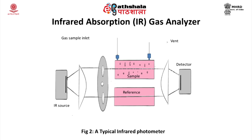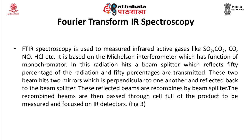Ultraviolet absorption: gases like nitrogen dioxide and sulfur dioxide absorb UV radiations. A major limitation of UV radiation is its high cost. Fourier Transform IR (FTIR) spectroscopy is used to measure infrared-active gases like SO2, CO2, CO, NO, and HCl. It is based upon the Michelson interferometer, which functions as a monochromator. In this setup, radiation hits a beam splitter which reflects 50% and transmits 50% of the radiation.